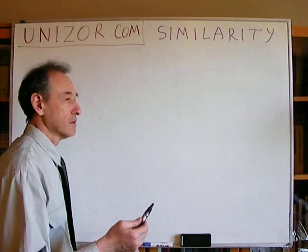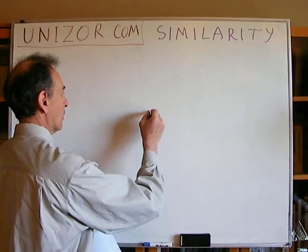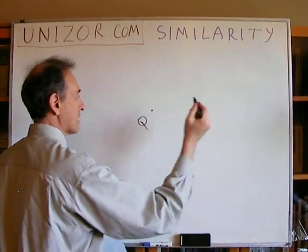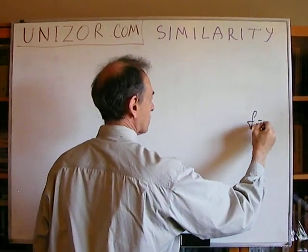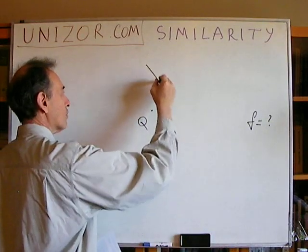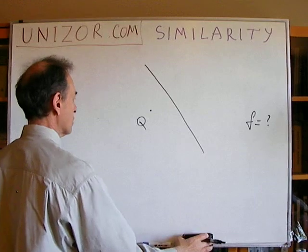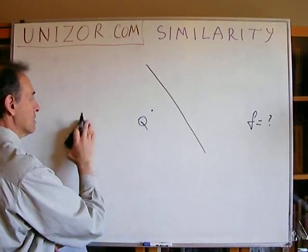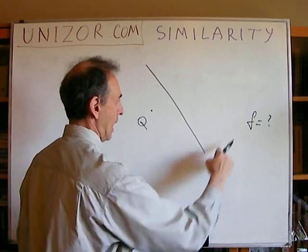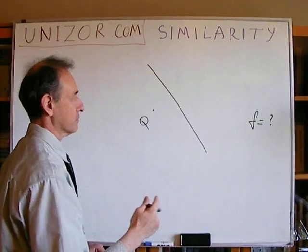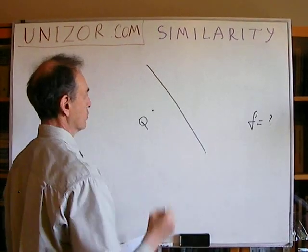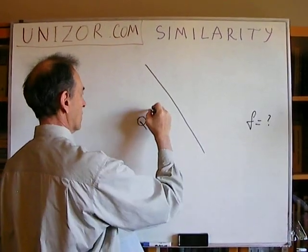Let's consider a similarity with some center — call it K — and some factor, whatever the factor is. It doesn't really matter. And consider you have a straight line. My first question is: what would be the image of this straight line after the transformation of scaling by this factor relative to this center? Let's just think about it.